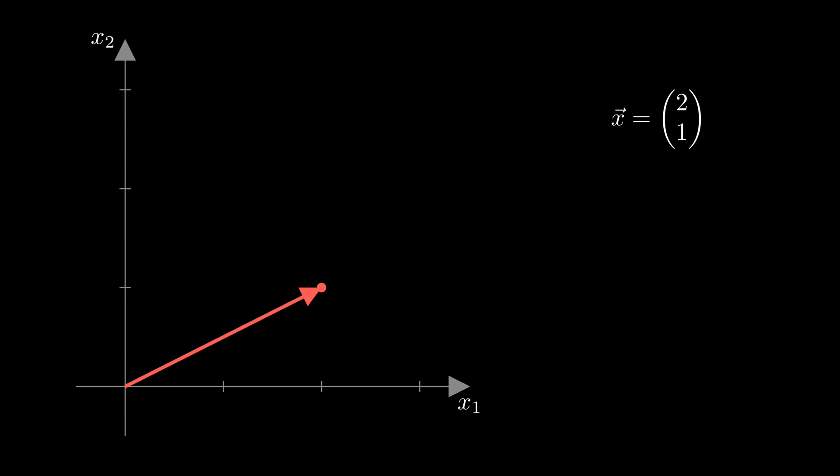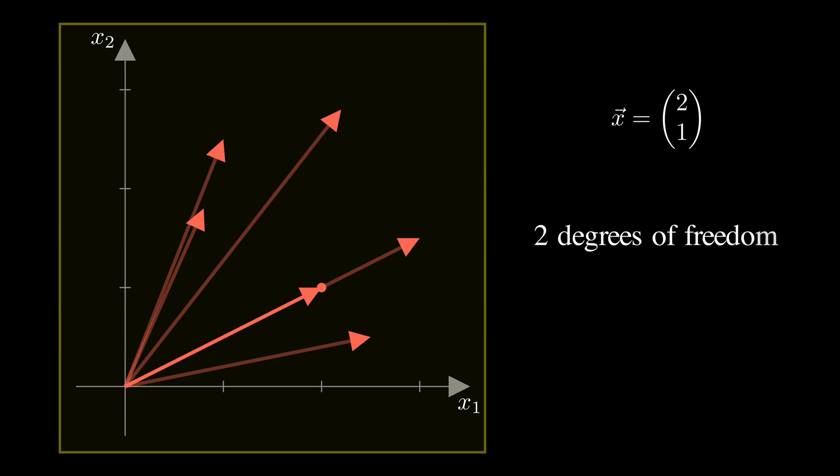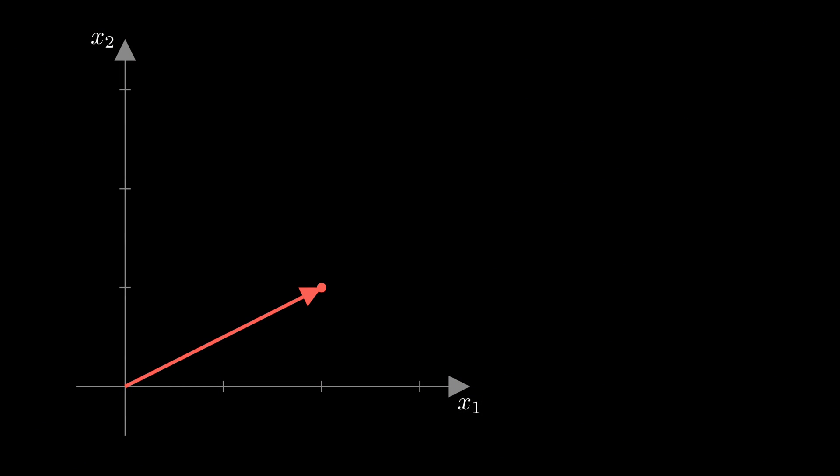Now, here's the thing. Every time you repeat your experiment and collect two new measurements, you get a different vector that could point anywhere in this two-dimensional plane, which means this random vector has two degrees of freedom. It's got two numbers that are free to change independently, but watch what happens when we break this vector down.